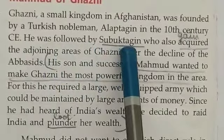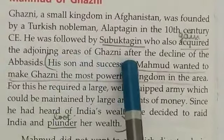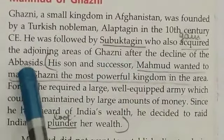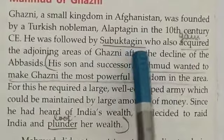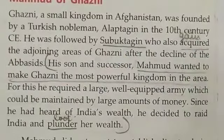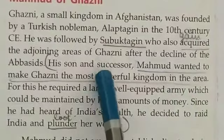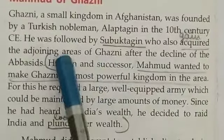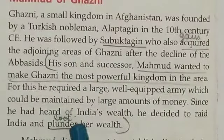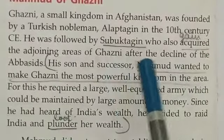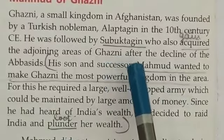Alaptagan was followed by Subhukthagan, who acquired — meaning gained or captured — the adjoining areas of Ghazni after the decline of the Abbasids. Adjoining areas means the surrounding areas that share the same boundary.